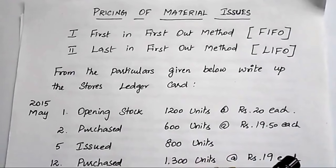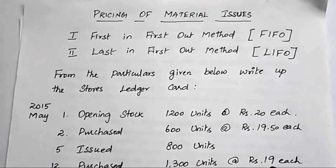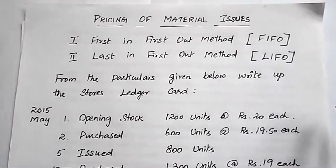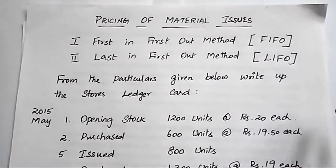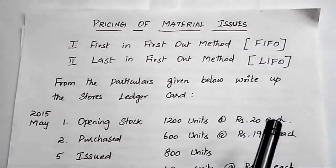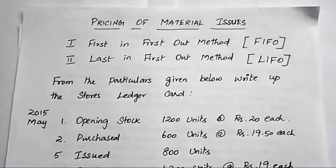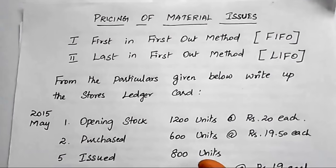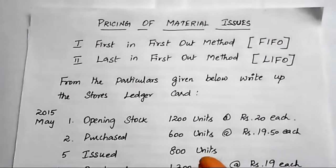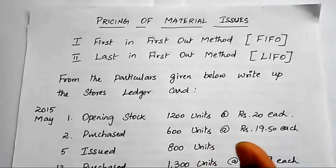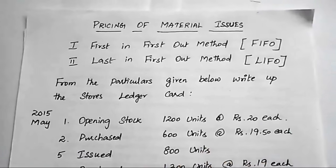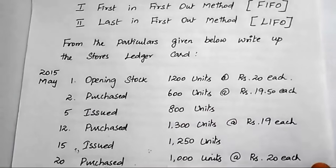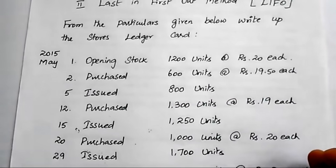Before they purchase the product, they will collect information and quotations from various suppliers. After receiving all the information, they will analyze the quotations and decide which is best, then make a decision to purchase material from a particular supplier. Generally, the purchase price of material fluctuates for different reasons.